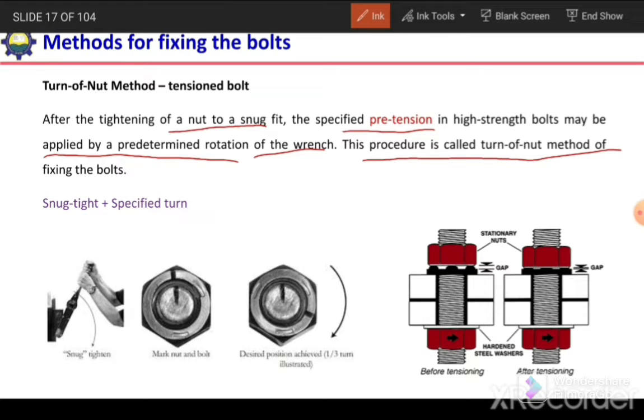In that method we have snug tight connection plus specified turn. This specified turn will produce pre-tension in the bolt. First we tighten the bolt by hand to a snug tight condition, then mark the nut as well as the bolt, and then rotate